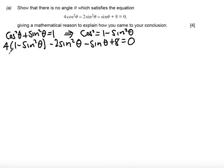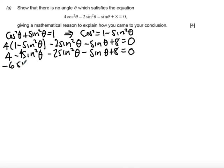Tidying this up we get 4 - 4sin²θ - 2sin²θ - sinθ + 8. Collecting terms I get -6sin²θ - sinθ and then plus 12.